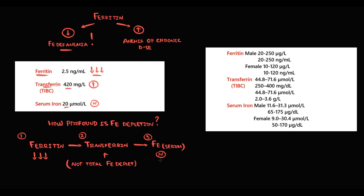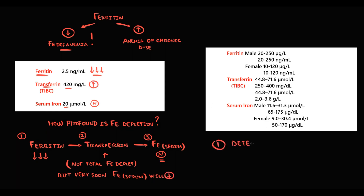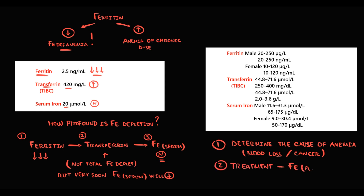At this moment it is not total iron depletion, but without treatment serum iron will soon also be lower than normal. Once iron deficiency anemia is confirmed, the next step is to determine the cause — usually chronic bleeding or some cancer. Treatment is typically iron pills with ferrous (Fe²⁺) iron, because this form is more easily absorbed in the duodenum.